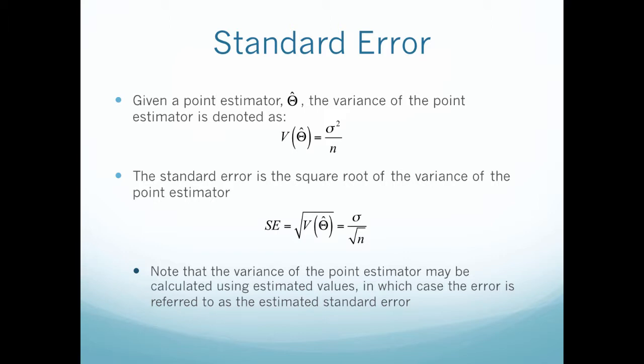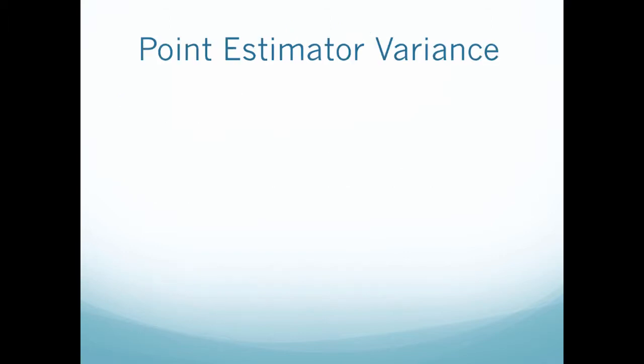Note here that the variance of the point estimator may be calculated using estimated values, in which case the error is referred to as the estimated standard error. That's why we care about the standard errors—it incorporates the fact that these are estimated values. This is also important because if we have multiple point estimators with different variances, then variance now allows us to further characterize which one is better.